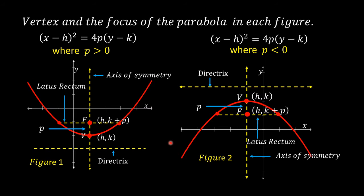Let us first look at the following figures. In Figure 1, the vertex of the parabola is at point (h, k). The focus is above the vertex. The first coordinate of the focus is h and the second coordinate is k plus p. If the focus is above the vertex, the parabola opens upward and its equation is in the form: (x minus h) squared equals 4p times (y minus k), where p is greater than zero.